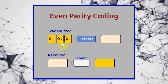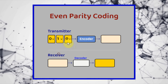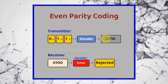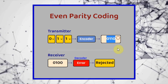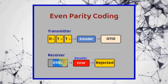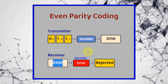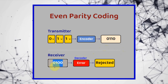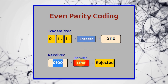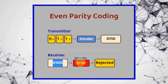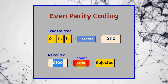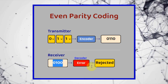Let's try another example. Let's say the message is 011. We click on the encoder. This is the generated codeword. You can see that the received codeword does not match the transmitted codeword, because the number of ones here is odd, not even. So the detector will say that a single error has occurred, and it will reject the received codeword.